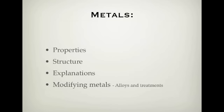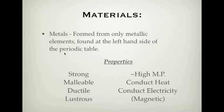Let's look at the properties of metals. Metals are formed from only the metallic elements, which are generally found at the left-hand side of the periodic table. The properties of metals are: they're pretty strong, so hard to break; they're malleable, meaning they can bend — malleability is the ability for a material to bend, and metals do have that property and can bend quite well.